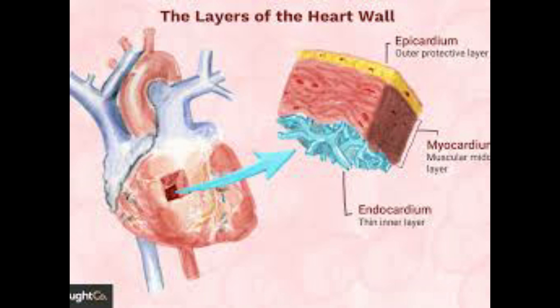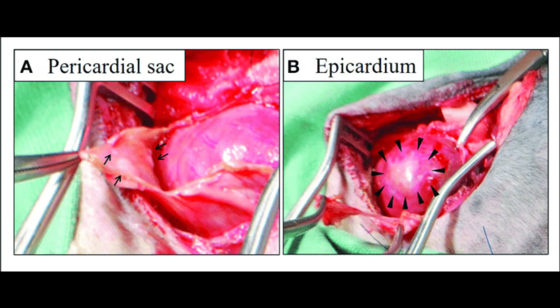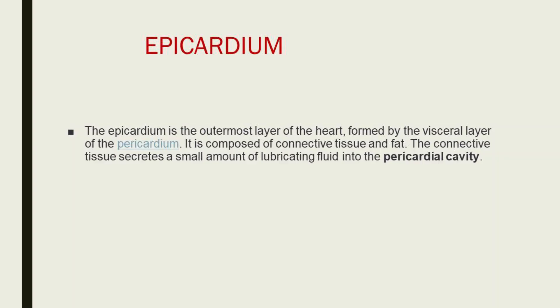Next are the layers of the heart. The first is the epicardium — the outermost layer of the heart, formed by the visceral layer of the pericardium. It is composed of connective tissue and fat. The connective tissue secretes a small amount of lubricating fluid into the pericardial cavity. The outer surface of the epicardium is lined by simple squamous epithelial cells.